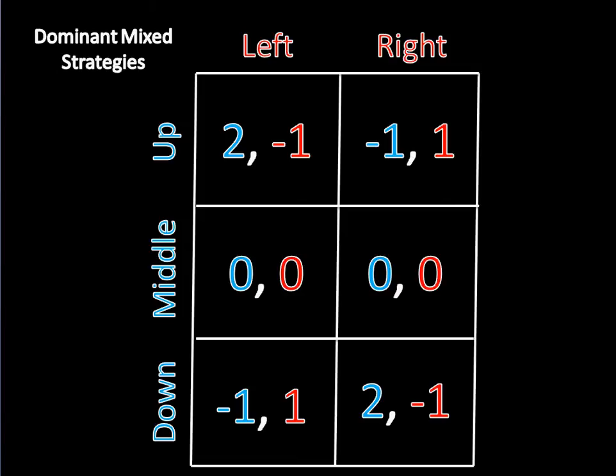So let's try solving this using the tools I've given you before. First, let's see if there are any dominant pure strategies. Well, there definitely isn't one for player 2. Left pays better when player 1 moves down, but right pays better when player 1 moves up.